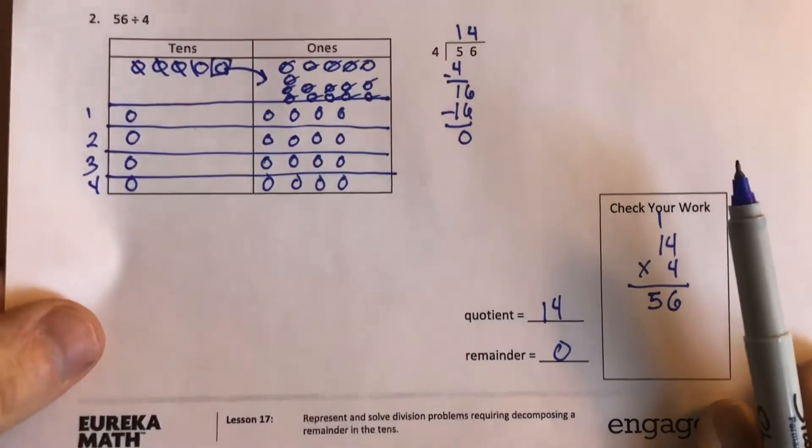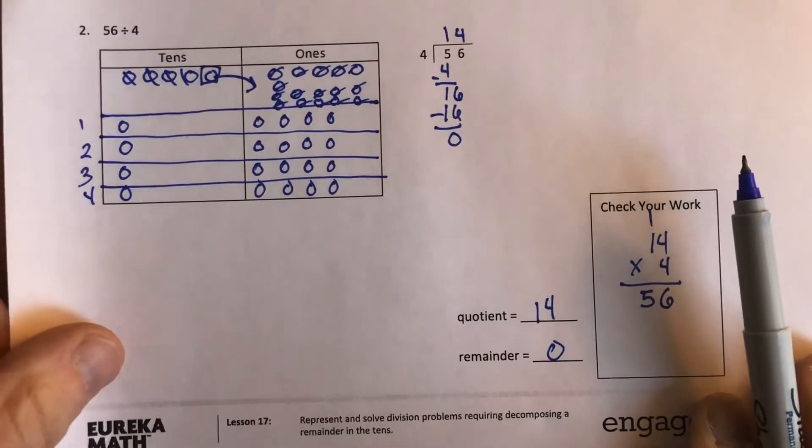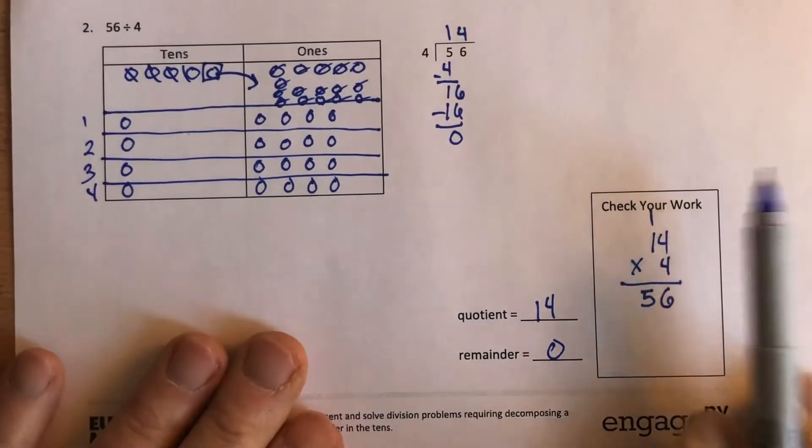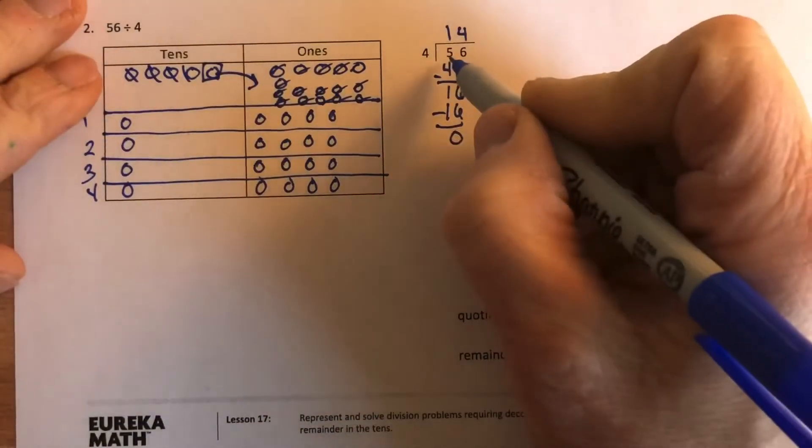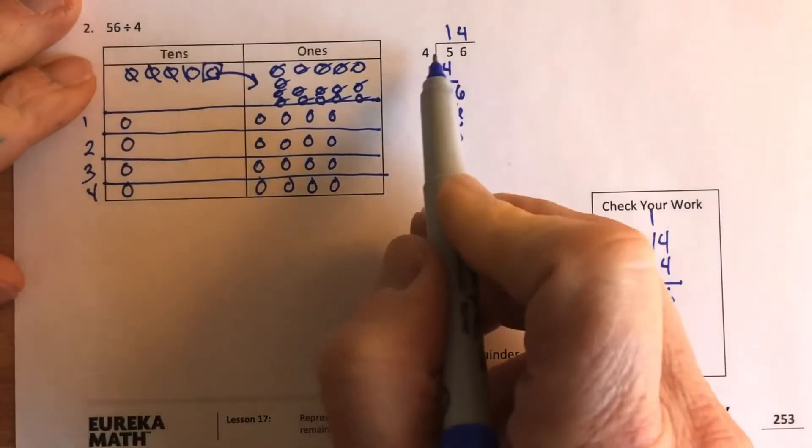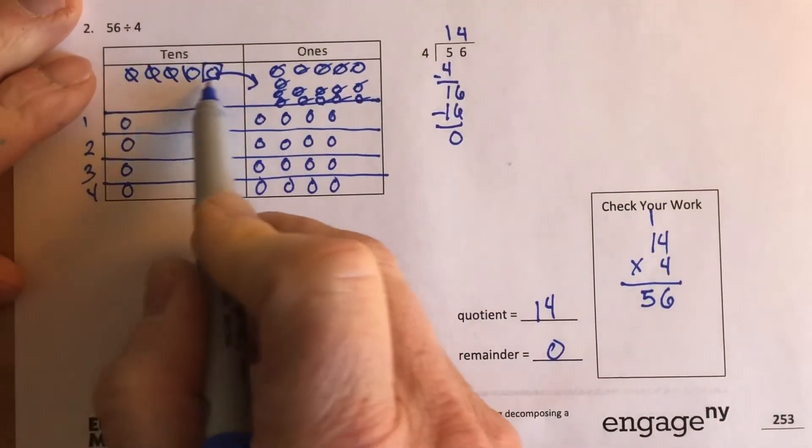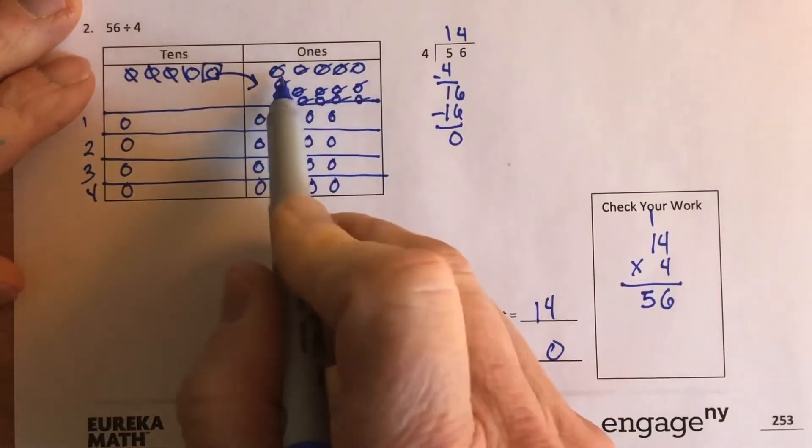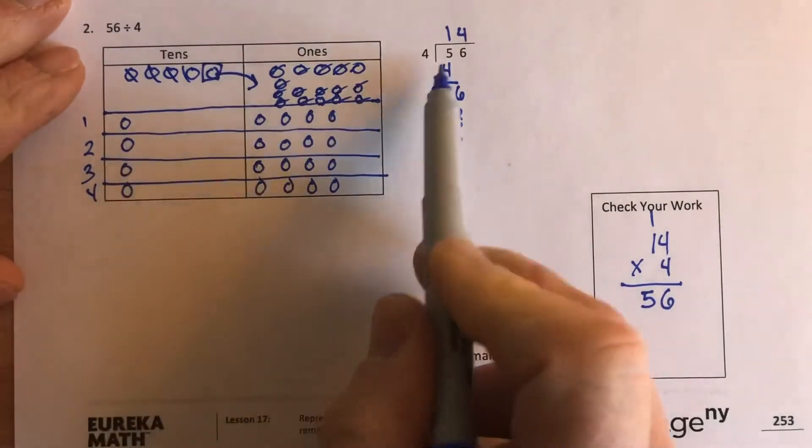Okay, so this is 56 divided by four. What I'm gonna do here is take my five discs, I put it over here, and my six ones I put it right here. Then I'm dividing it into four, so I made four sections here across my place values.